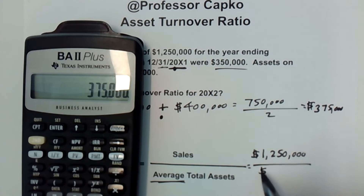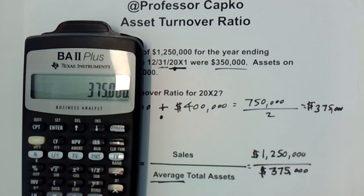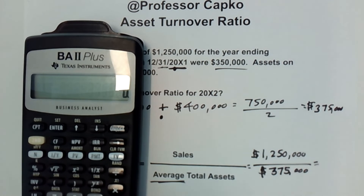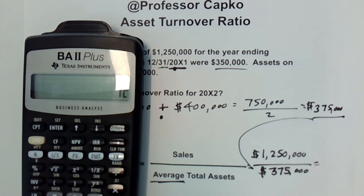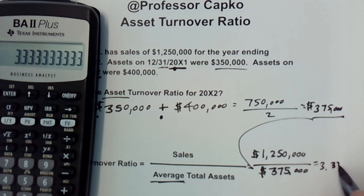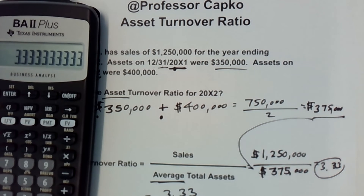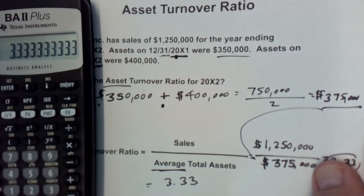The process is the same regardless of what the numbers are. Always take a look at how you are asked to round — maybe you're rounding to the penny. So now I take $1,250,000 and divide that by the average total assets, which we found to be $375,000. $1,250,000 divided by $375,000 equals 3.33. That is our asset turnover ratio.